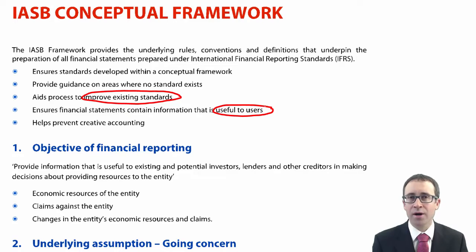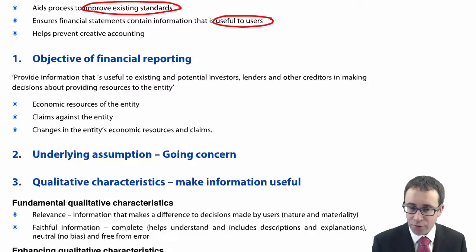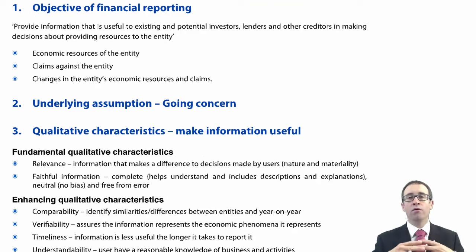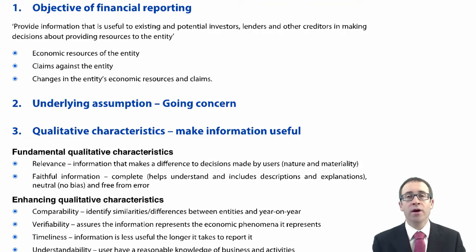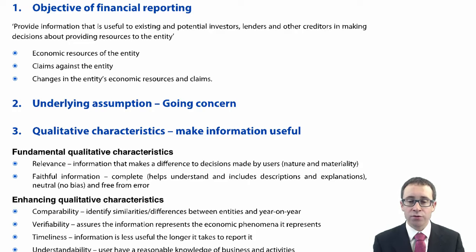So that's just the reasons why we have the framework. What the framework then does is identify several different sections of what the overall framework tries to do specifically. First of all, we look at the objective of financial reporting. If we know what the objective is, then we can ensure that the framework is developed to meet those objectives. So it says that the objective is to provide information that is useful to existing and potential investors, lenders and other creditors in making decisions about providing resources to the entity.